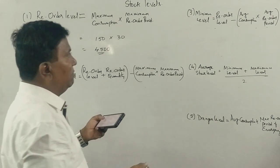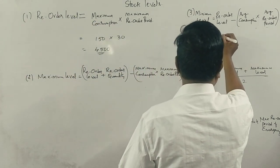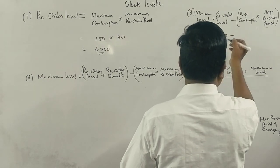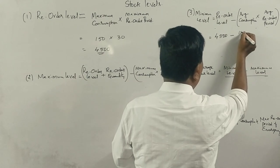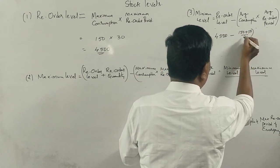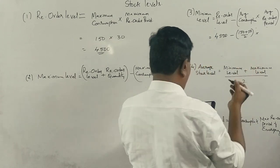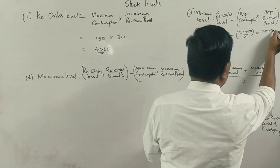Now compute the minimum level. Minimum level: reorder level is 4,500. So average consumption, 150 plus 50 divided by 2, into 25 plus 30 divided by 2.